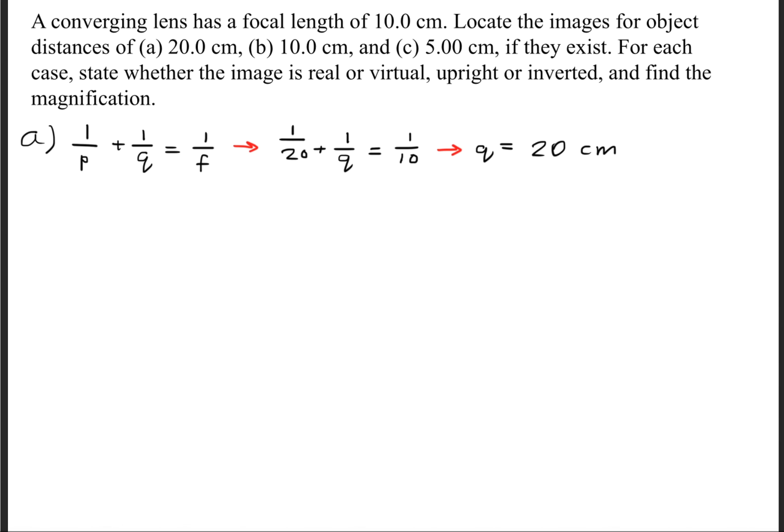Now we have to find the magnification. So note that the magnification is negative Q over P, and we'll find that we'll get a magnification of negative one. So because Q is a positive value, that is a real image. And because the magnification is negative, it's going to be an inverted image.